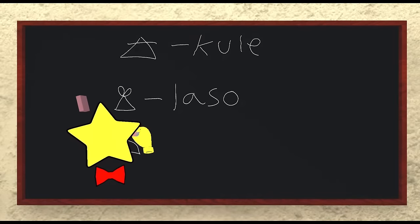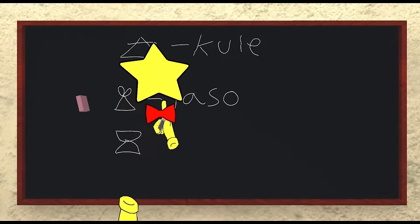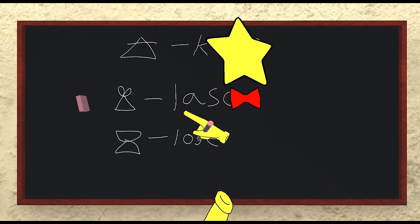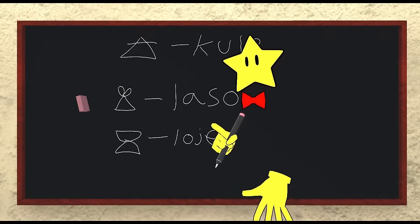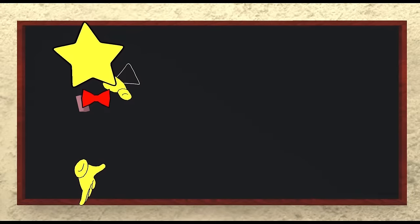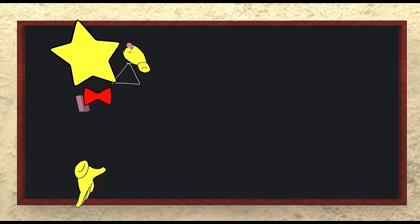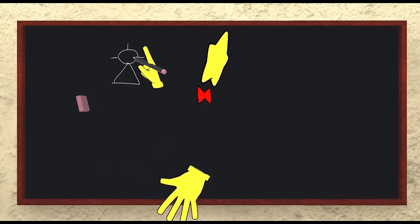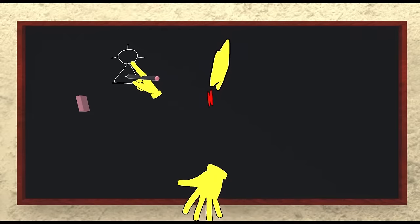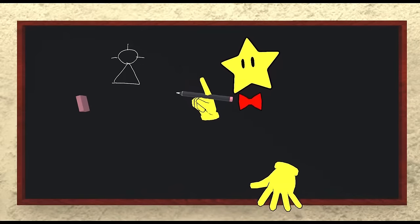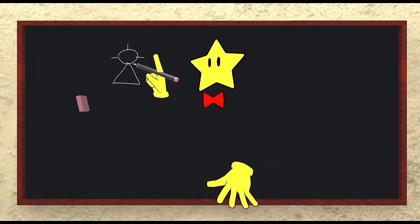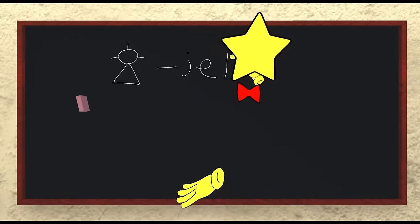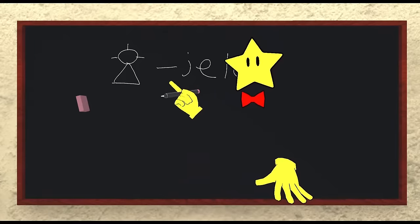Next, we again have our triangle symbol combined with the symbol for mouth — this is loje, L-O-J-E, which refers to shades of red. After that, we have the triangle symbol with a circle and three lines around it — you'll recognize this as kule and suno combined, meaning color and sun. This word is jelo, J-E-L-O, and it refers to shades of yellow.